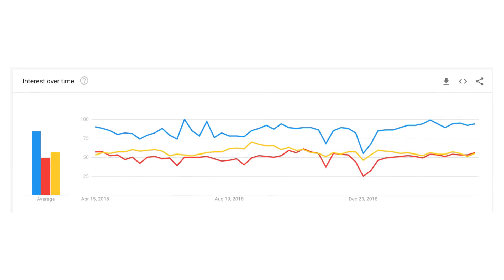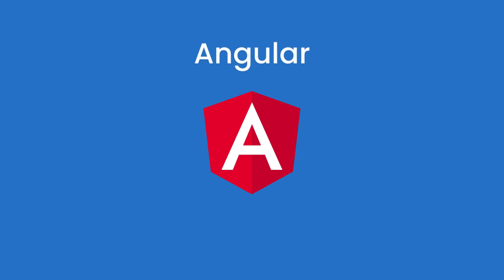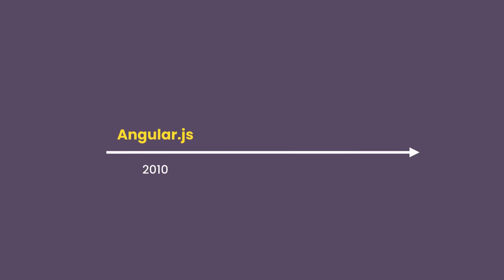Now, let's have a quick look at the history of these frameworks. Angular is the oldest of the three. It's developed by Google and was initially released in 2010. Until 2016, it used to be called AngularJS. In 2016, the Angular team released Angular 2, which was a complete rewrite of AngularJS — it had nothing in common with the previous version. It was a completely new framework. To reduce confusion, the Angular team decided to drop the JS from the original name and called the new framework Angular.